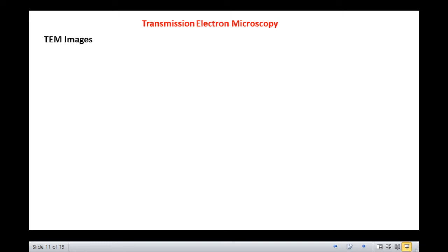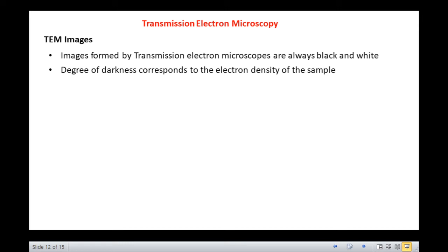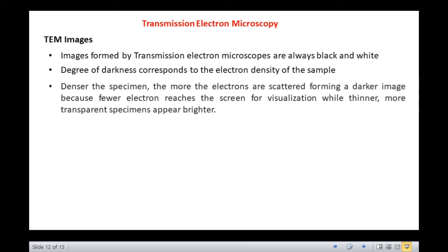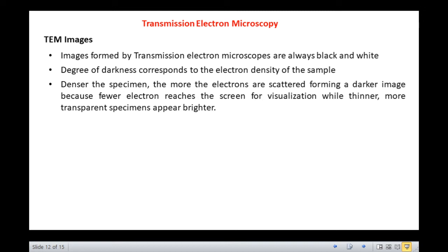Images formed by transmission electron microscopes are always black and white. The degree of darkness corresponds to the electron density of the sample. The denser the specimen, the more the electrons are scattered, forming a darker image because fewer electrons reach the screen for visualization, while thinner, more transparent specimens appear brighter.